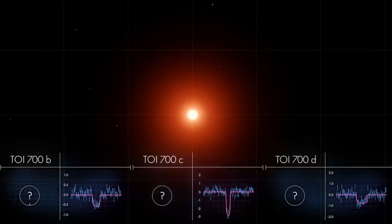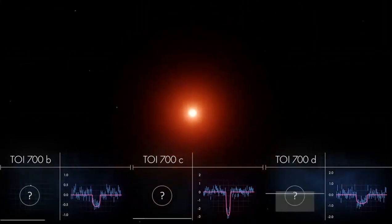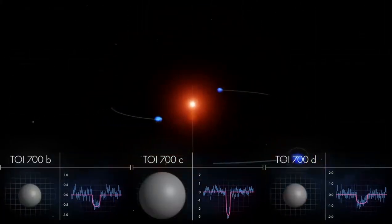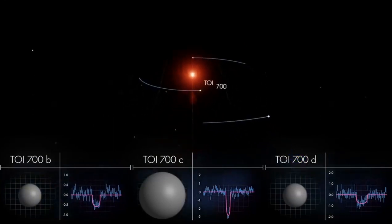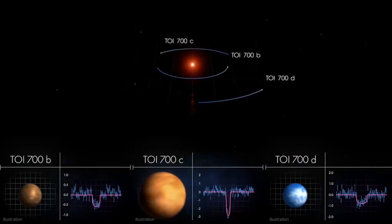TESS observed this system for nearly 11 months and saw each planet transit multiple times. Scientists determined that the inner and outer planets are almost Earth-size and may be rocky. The middle world is more than twice as large and most likely made of gas.